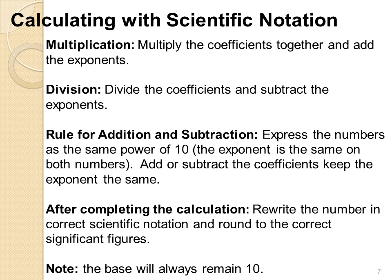For starters, if we're doing multiplication, we will multiply the coefficients together and add their exponents. Division is the opposite. We divide the coefficients and subtract their exponents.